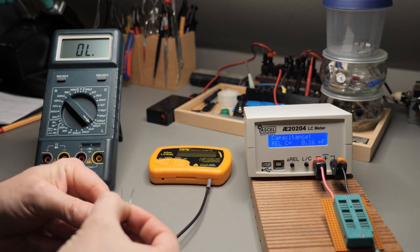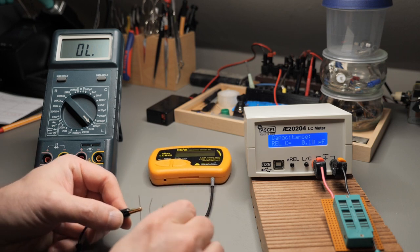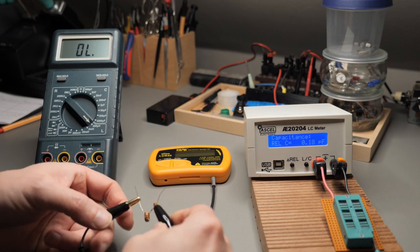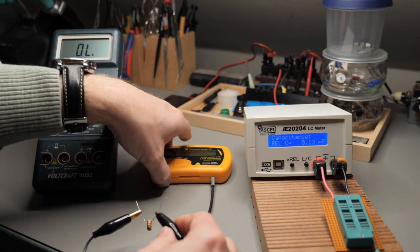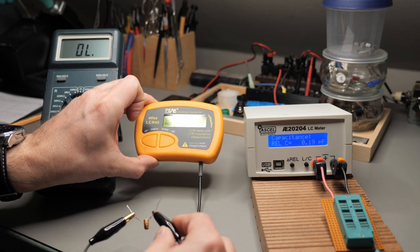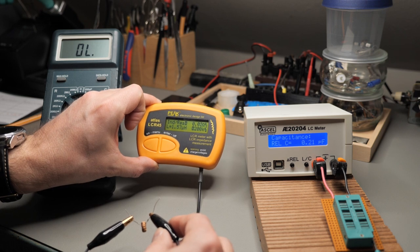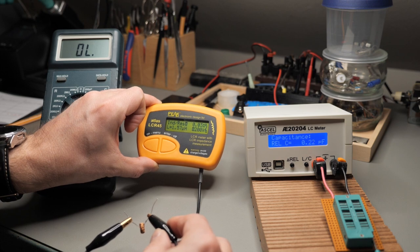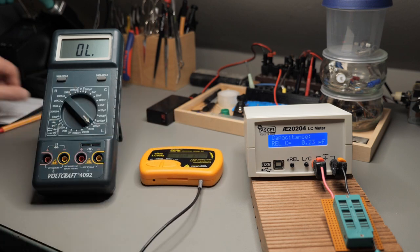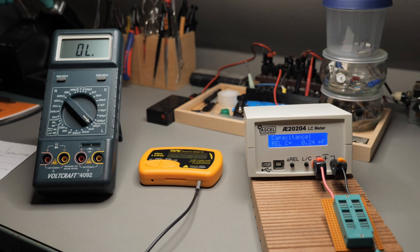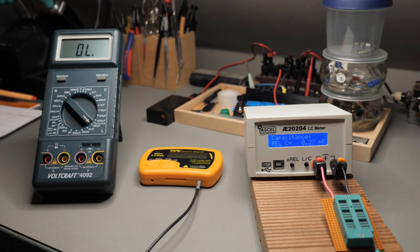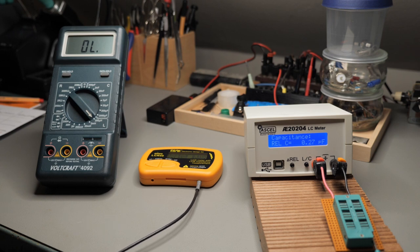Okay so get it out again, hook it up to the Peak Atlas. It already switched off now because I'm rambling so long. Press the button. Let's have a look. And it shows us 1.58 microhenry, 1.57. Okay. Let's write it down. So already completely off the Voltcraft, because I think my trust is in the Peak Atlas here.